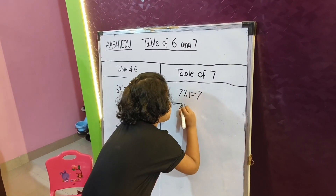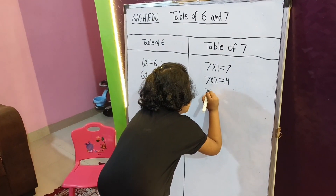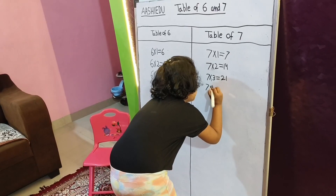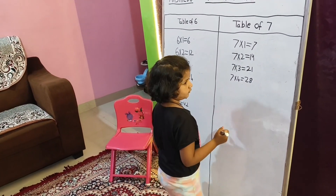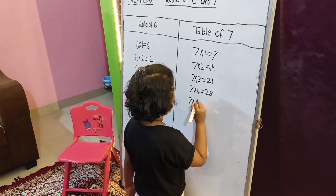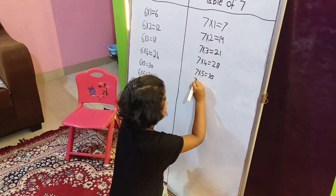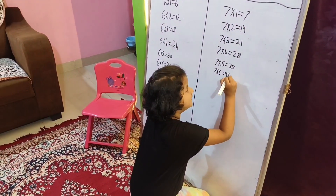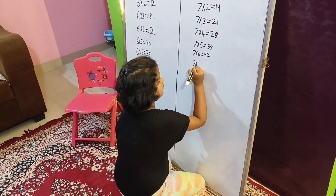7 multiply 2 equal 14. 7 multiply 3 equal 21. 7 multiply 4 equal 28. Ok, ok, ok. So, 7 multiply 5 equal 35, very fast. 7 multiply 6 equal 42, very nice.